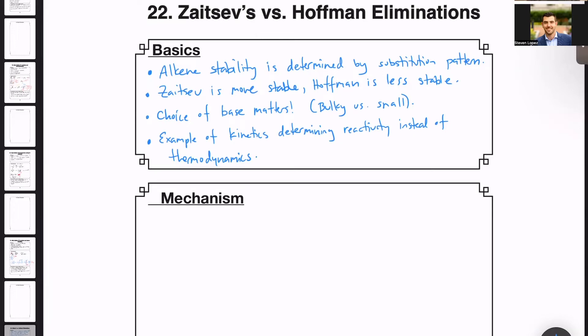Hi everyone, and welcome to Organic Chemistry on YouTube. Today we'll be talking about Zaitsev and Hoffman alkenes, their stabilities, as well as elimination reactions that can lead to both of those products.